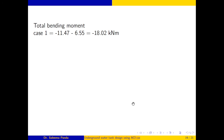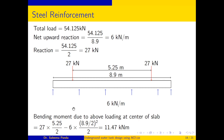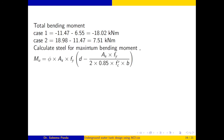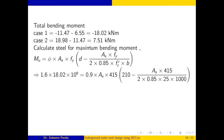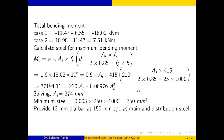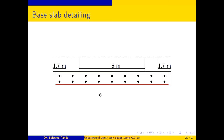Combining moments: Case 1 total = 11.47 (base slab) + 6.55 (wall base, Case 1) = 18.02 kN·m. Case 2 total = 18.98 (wall base, Case 2) − 11.47 = 7.51 kN·m. The maximum governing moment is 18.02 kN·m. Ultimate moment = 1.6 × 18.02 = 28.83 kN·m. Solving the quadratic with effective depth 210 mm gives As = 374 mm², less than minimum of 750 mm². Provide 12 mm dia bars at 150 mm c/c for both main and distribution steel. The detailing shows top and bottom main steel with perpendicular distribution steel throughout the base slab.